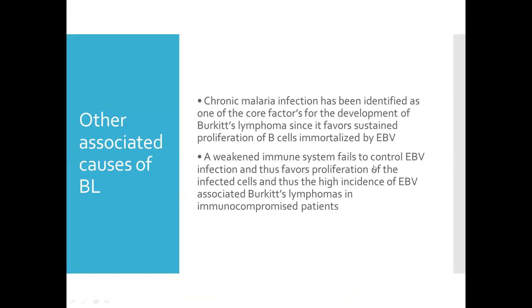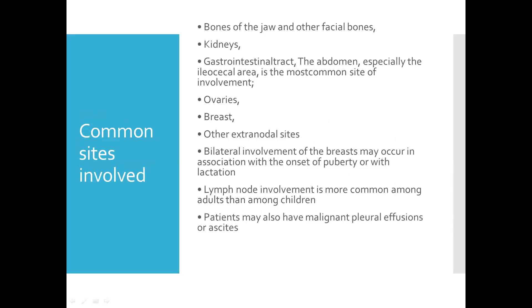A weakened immune system fails to control EBV infection and thus favors proliferation of infected cells, explaining the high incidence of EBV-associated Burkitt's lymphoma in immunocompromised patients. Common sites of involvement include bones, kidneys, GI tract, ovaries, breast, and extranodal sites. Bilateral involvement of the breast may occur in association with onset of puberty or with lactation. Patients may also have malignant pleural effusions or ascites.